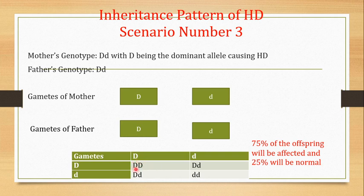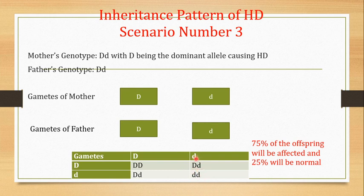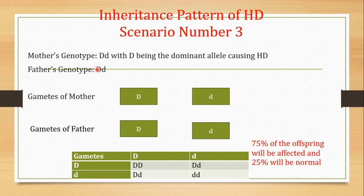When you cross them, one offspring will have both diseased alleles — capital D capital D — and will be affected. Two offspring will each have one copy of the diseased allele and will also be affected. But one offspring receives a normal allele from the mother and a normal allele from the father, so that offspring will be normal. This means there is a 25% chance of a normal individual even when both parents are affected in the heterozygous condition.